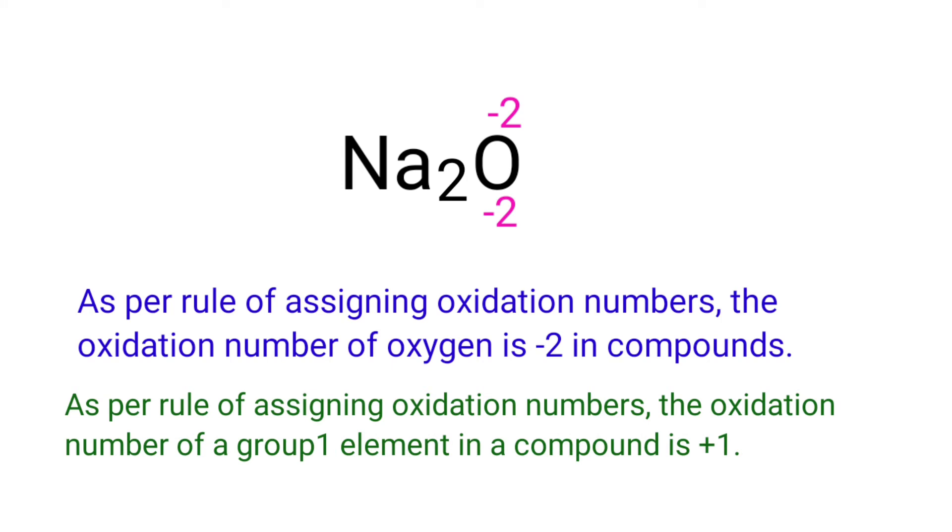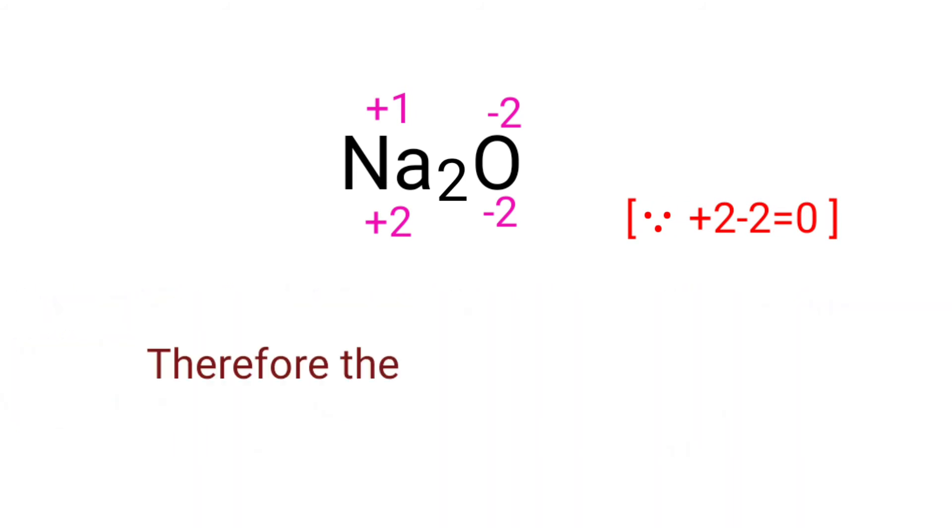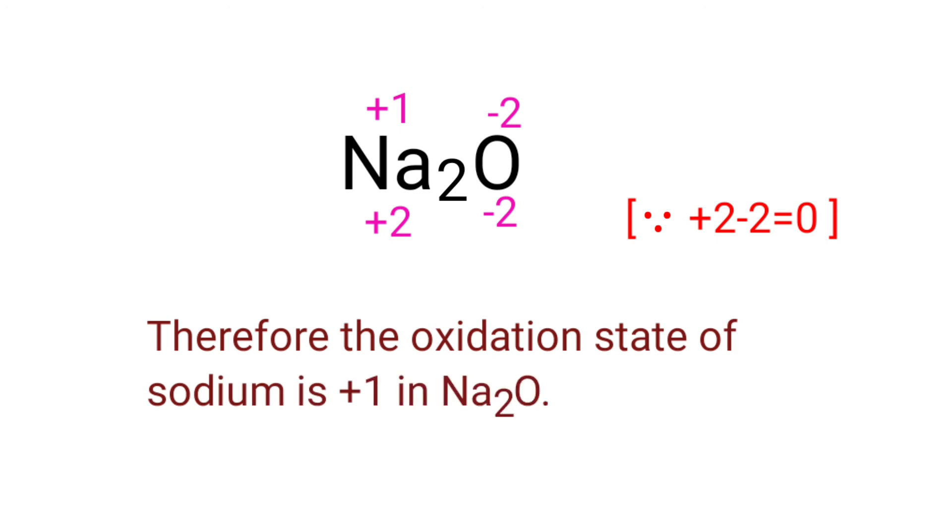As per rule of assigning oxidation numbers, the oxidation number of a group one element in a compound is plus one. Sodium is a group one element, so the oxidation number of sodium is plus one. Therefore, the oxidation state of sodium is plus one in Na2O.